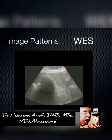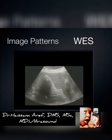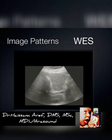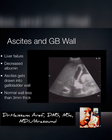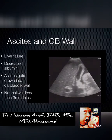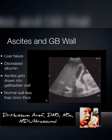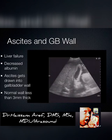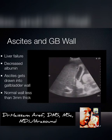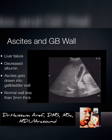This is actually a true WES sign — a contracted gallbladder around a whole bunch of stones, all casting one big fat shadow out of the liver. When you have ascites, fluid leaches into the gallbladder wall and almost always patients with ascites have thickened gallbladder walls. A normal gallbladder wall should be less than 3 millimeters.